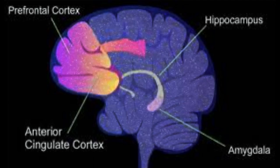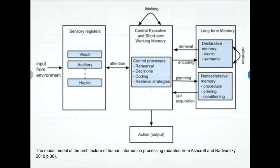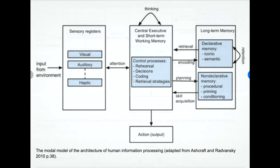The most widely understood process of memory is the modal model. A large amount of sensory information comes in through our senses — visual, auditory, and haptic. We then pay attention to subsets of this information and place them into short-term and working memory. With additional cognitive function, through encoding and planning, we move these into long-term memory. Long-term memory goes back and forth with short-term memory; it is very malleable, and this is what plays into false memories.